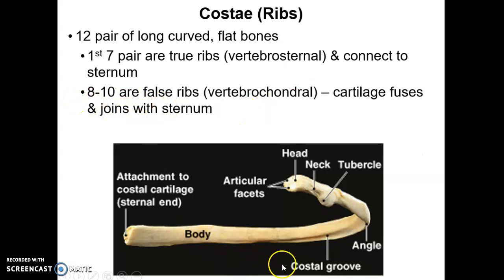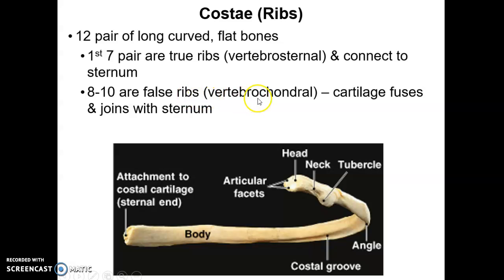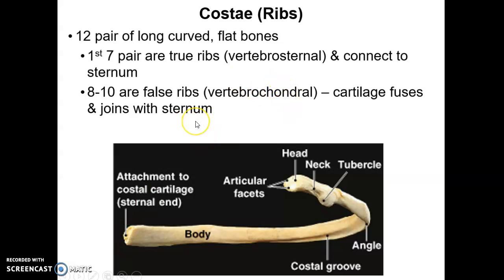Pairs 8 through 10 are referred to as false ribs because they have cartilages that fuse together before that cartilage contacts the sternum. So those ribs — pairs 8, 9, and 10 — are called vertebrochondral. Vertebral because they do articulate with the thoracic vertebrae, but chondral because anteriorly their cartilage is fused before it reaches the sternum.